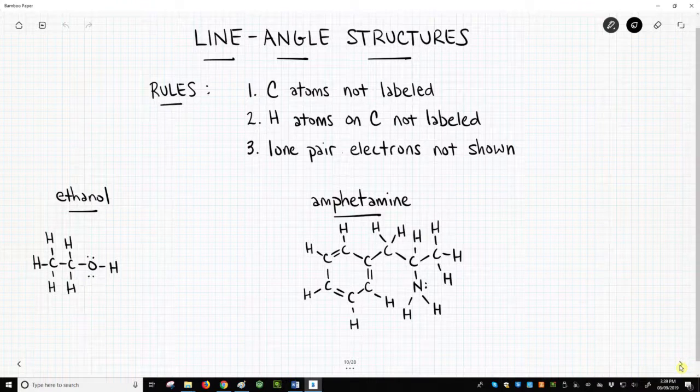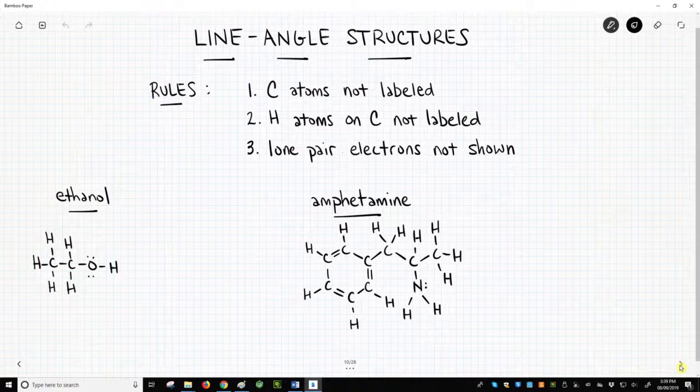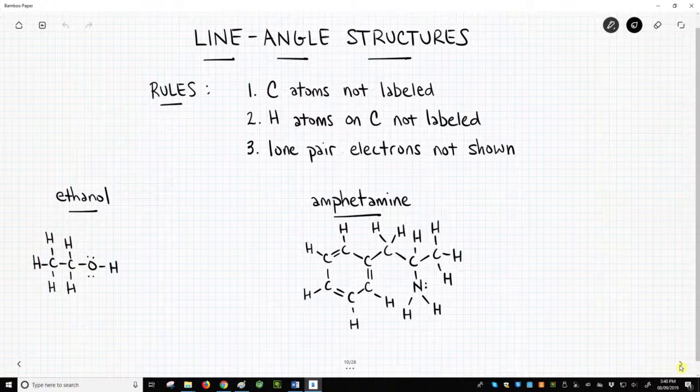There are three rules for line-angle structures. One, carbon atoms are not labeled. Two, hydrogen atoms on carbons are not labeled. Other hydrogens like those on oxygen or nitrogen are still required. Three, lone pair electrons are not shown. You can see that these rules will greatly minimize what we need to write in our structures.